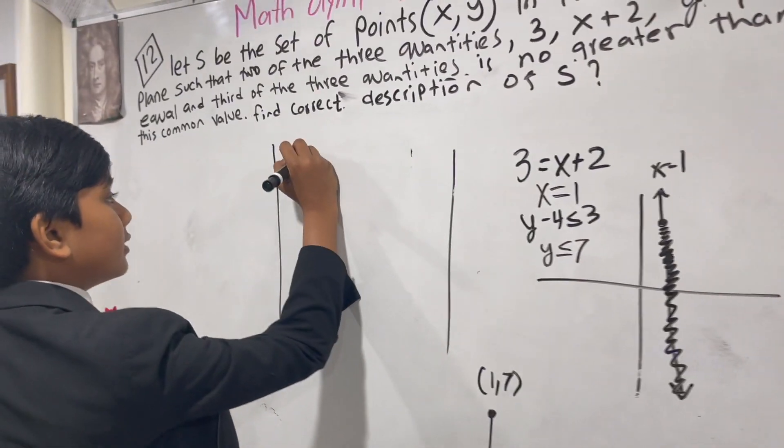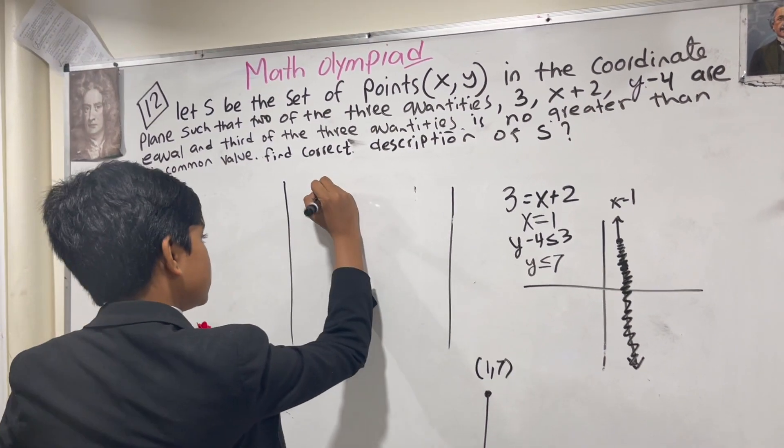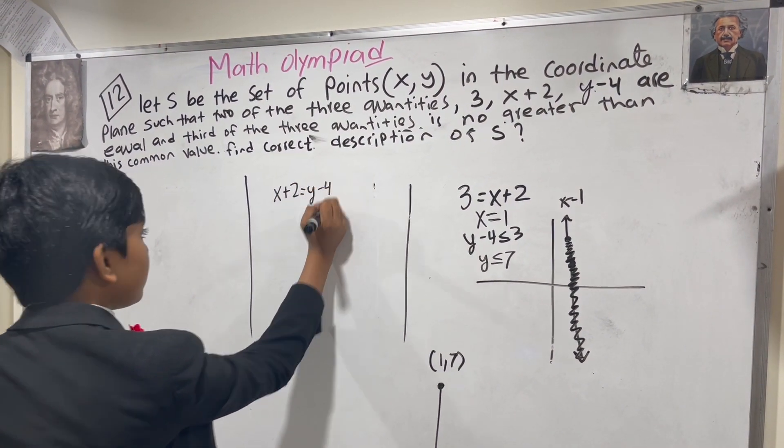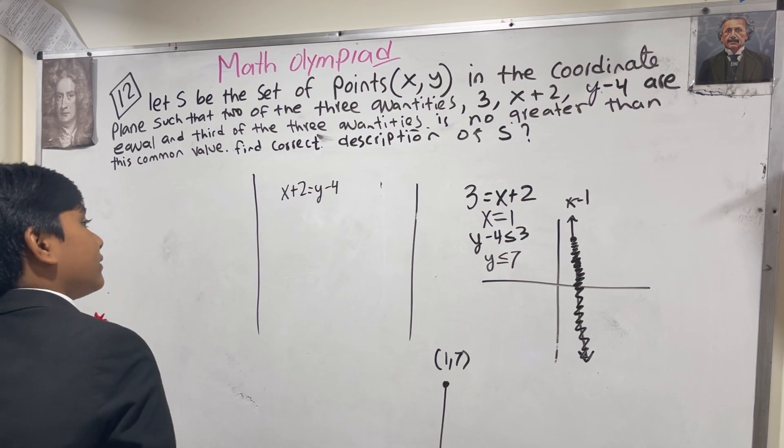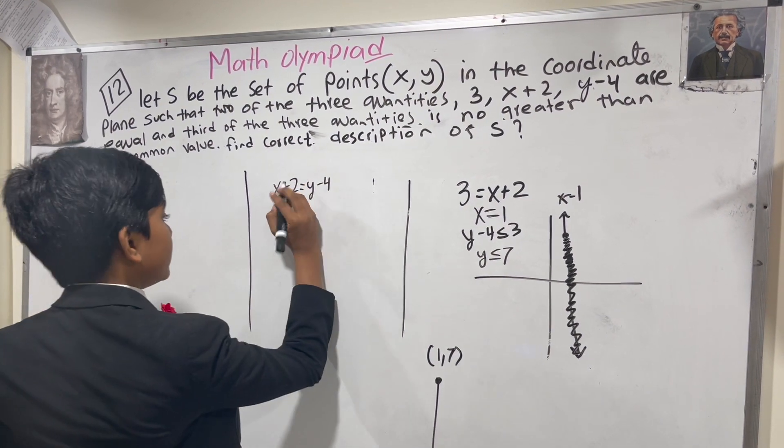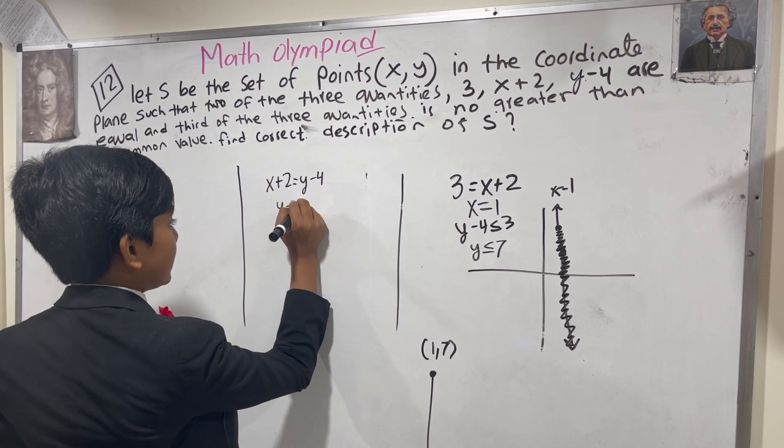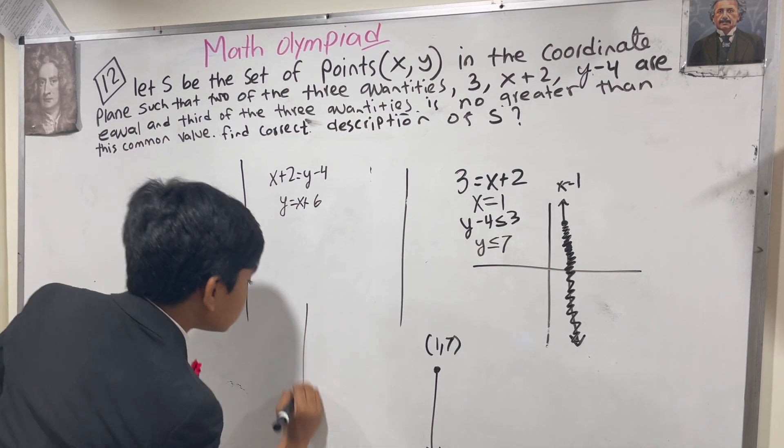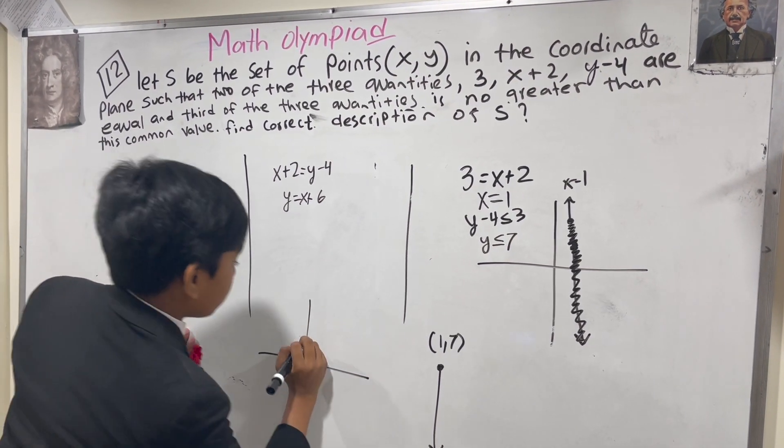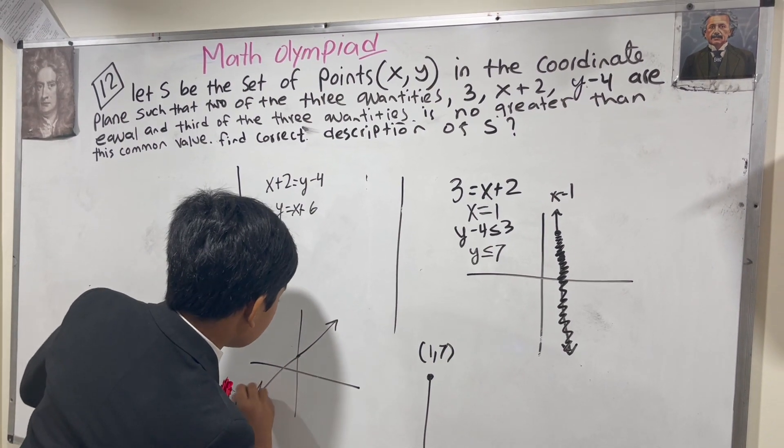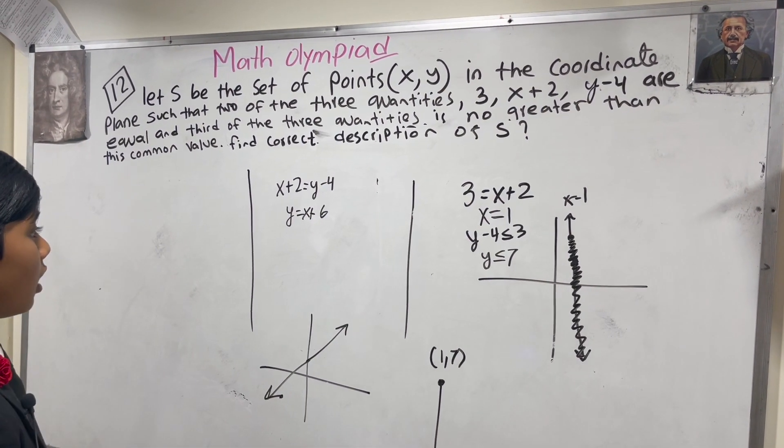Alright, second scenario. x plus 2 equals y minus 4. This one is a bit hard, but it's fine. y equals x plus 6, hence. So let's draw that here. That would be something like this.